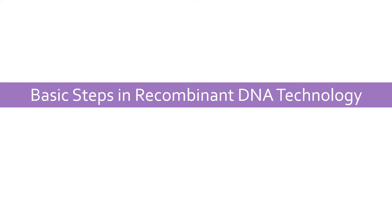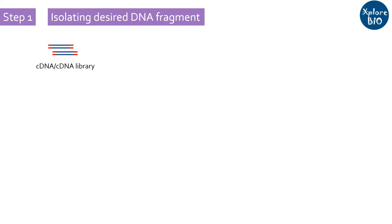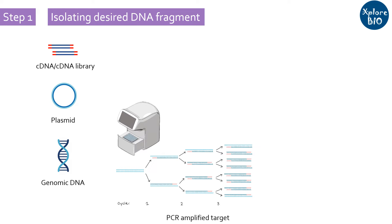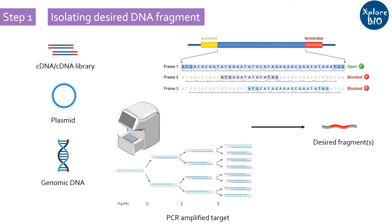The first step is the isolation of the desired DNA fragment. Generally, a specific gene is obtained through cDNA, plasmid, or genome, or it may be produced by PCR amplification. If the purpose is getting gene expression, take care of the open reading frame so that the protein will get expressed properly.